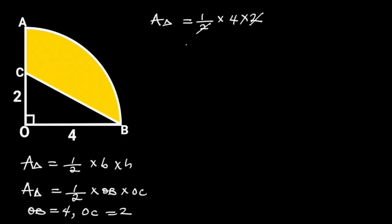2 will cancel out 2, and we are left with 1 times 4, times 1. Which is equal to 4 square units.